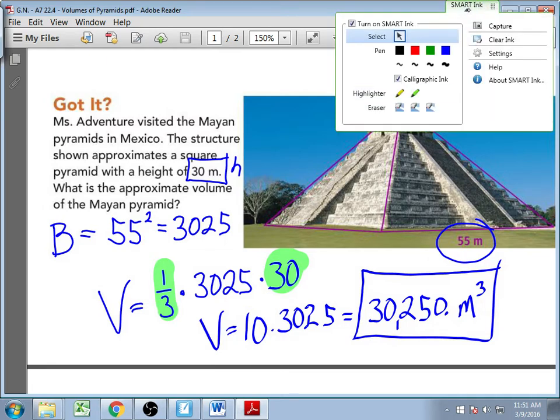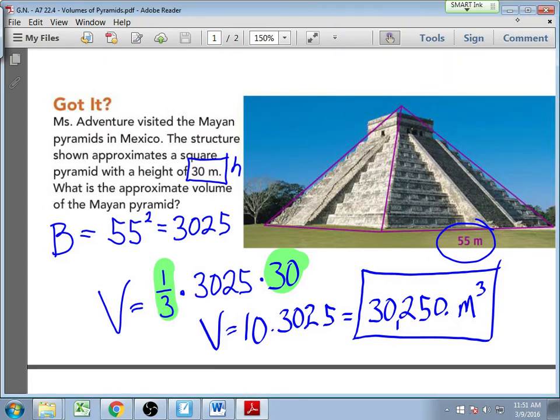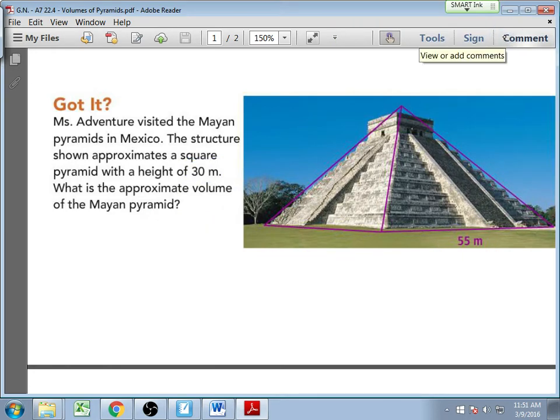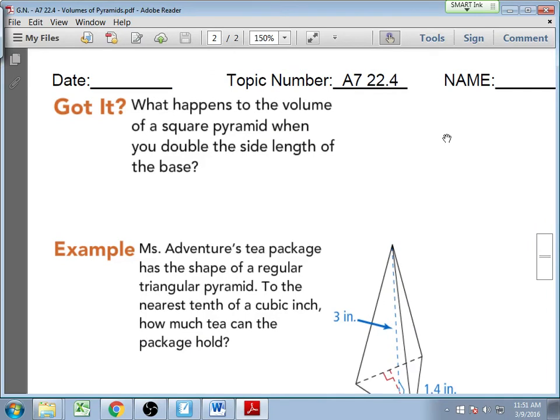So approximately the amount of stone used to make that pyramid was 30,250 cubic meters of stone, which is a lot. So if you think about how much time and effort would have gone into making that structure, it's pretty impressive. Please make sure this is all making sense to you. If you're having any issues, go ahead and let me know. So what happens to the volume of a square pyramid when you double the side lengths of the base?